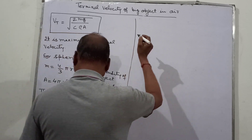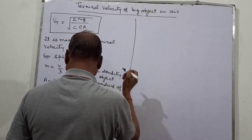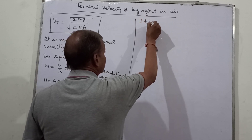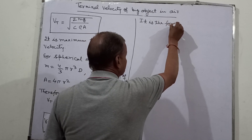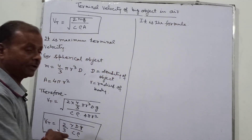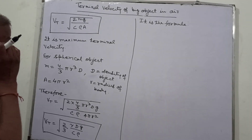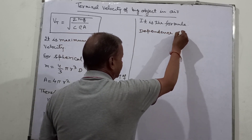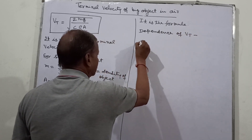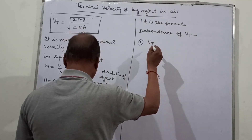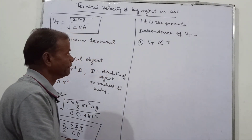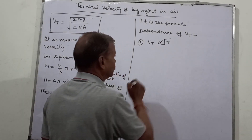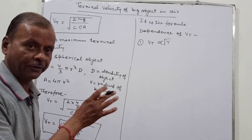This is the formula for terminal velocity of a spherical body. We can see that Vt depends upon the following factors. First, Vt is proportional to the square root of r, the radius of the object. So when the size of the object increases, the terminal velocity increases.